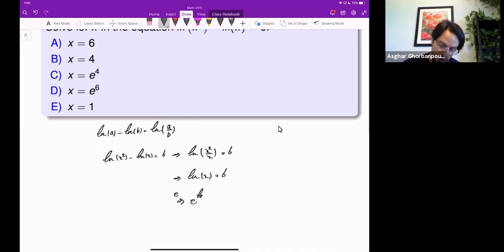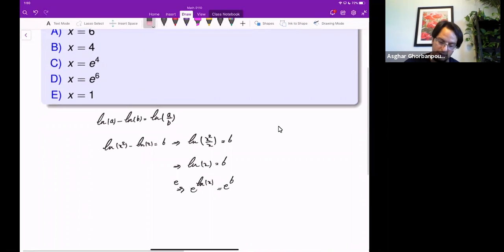So e to the power ln of x equals to e to the power 6. And we know that e to the power ln of anything you have there is going to be that thing. And here, this will give me x equals to e to the power 6.